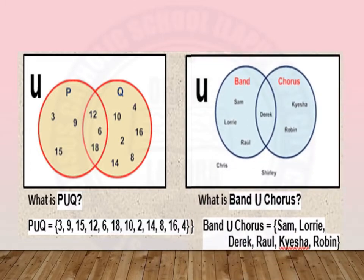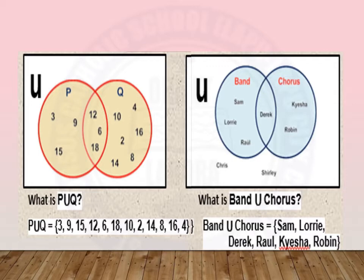Another example. In this given Venn diagram, there are two sets: the set of students who like band and the set of students who like chorus. Since we are talking about union, we are just going to write all the elements of band and all the elements of chorus. So, band union chorus has elements Sam, Lori, Derek, Raul, Kesha, and Robin.